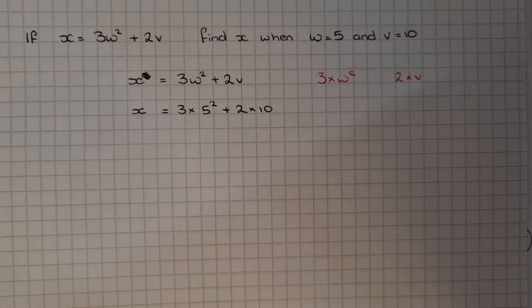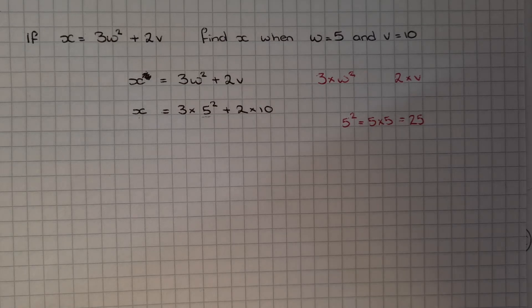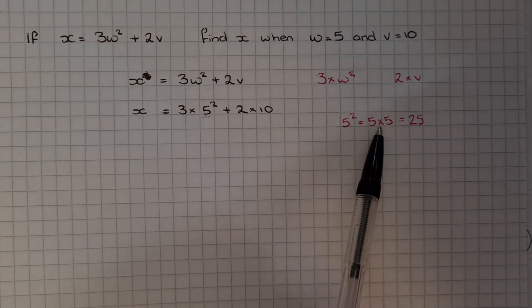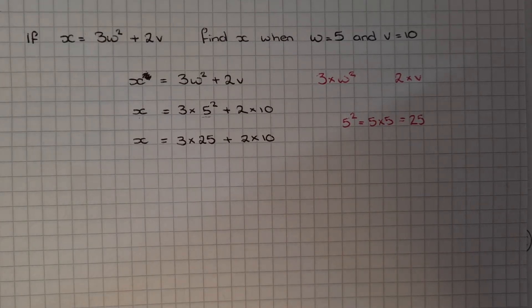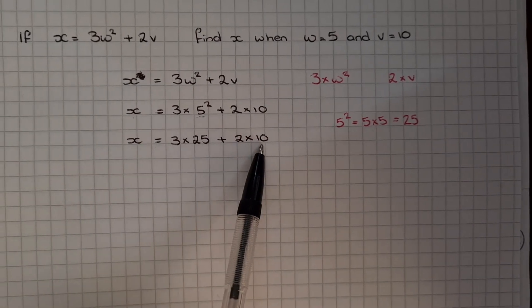Using BODMAS again, we need to start by working out what 5 squared is. 5 squared is 25 because it means 5 times 5. So we've got X equals 3 times 25 plus 2 times 10.